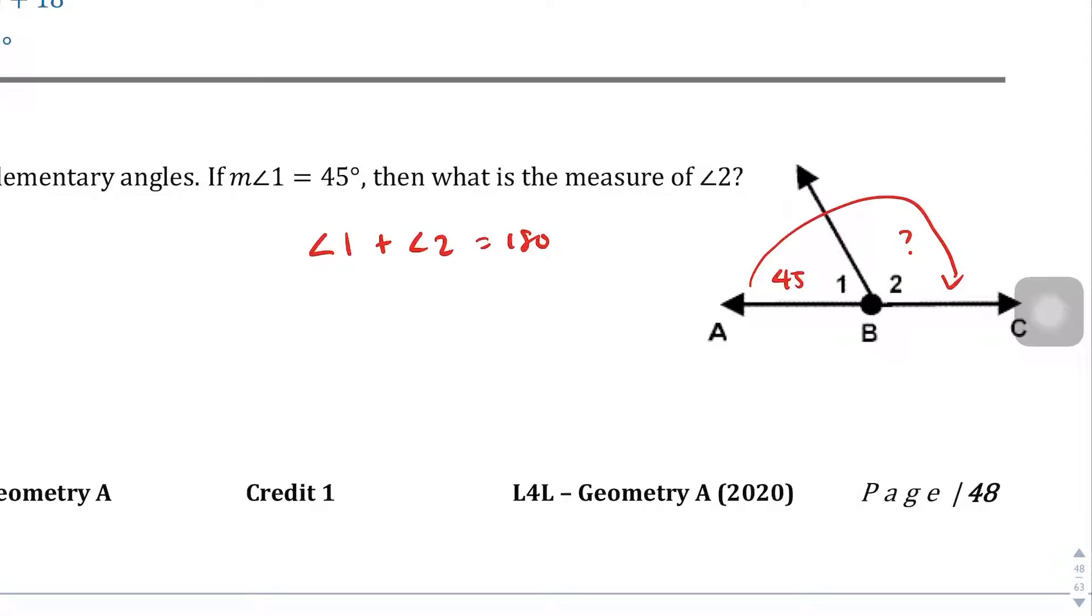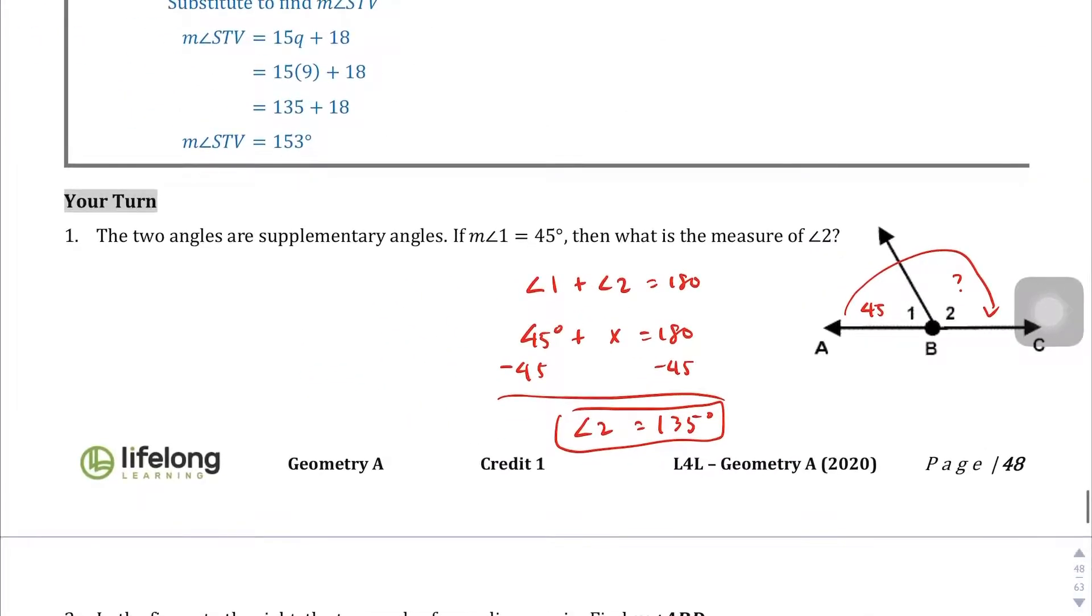So if we go ahead and just substitute some information here, 45 degrees plus an unknown angle, we're just going to call it x, equals 180. If we subtract 45 from both sides, you should get x equals 135 degrees. Therefore, we can say that angle 2 equals 135 degrees. So that's an example of the linear pair theorem there.